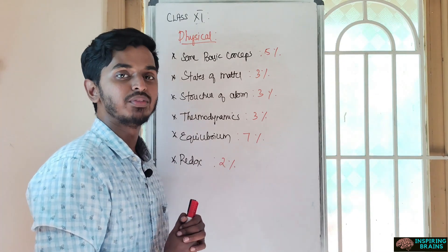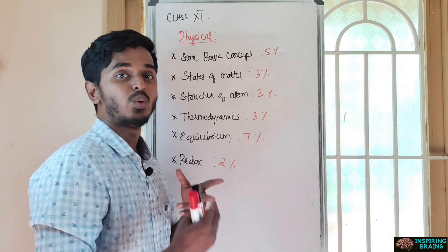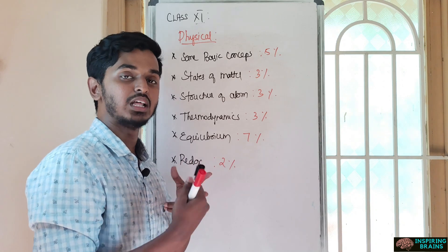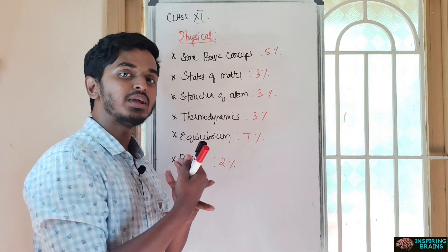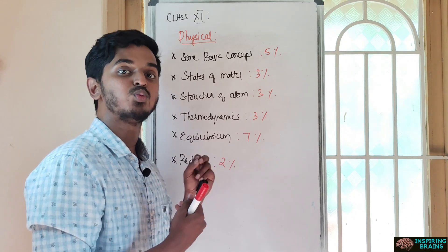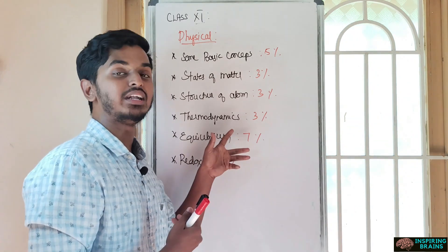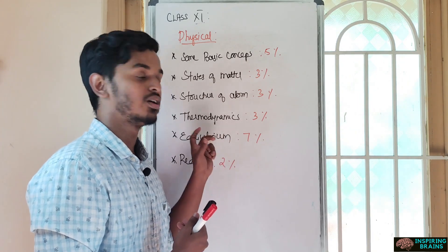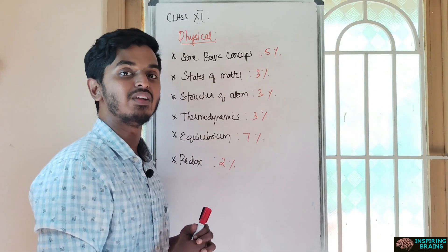Equilibrium - you got two parts. One is chemical equilibrium, another is ionic equilibrium. Chemical equilibrium itself carries 3%, ionic equilibrium carries 4%. It has more weightage than any other units, so just concentrate on equilibrium.